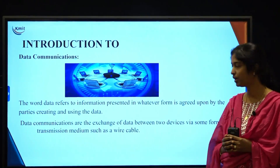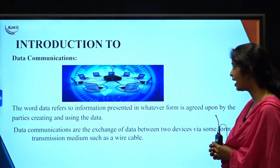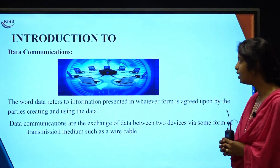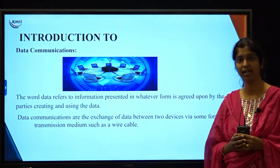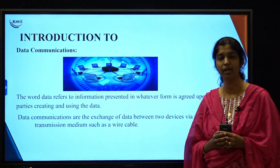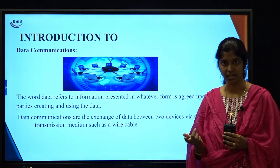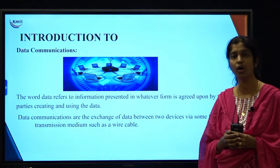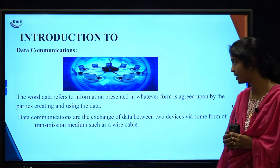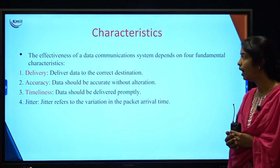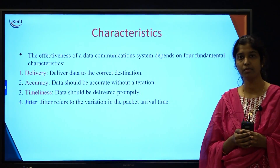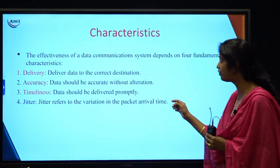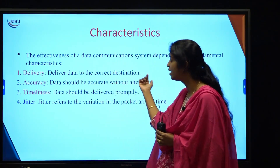If you see the picture, it is very much clear that we have some communicating devices where we are communicating between devices and sharing data. To define what is data communication, data is nothing but the raw fact or the information that we are communicating. Data communication is generally the exchange of data between devices through a transmission link or communication media. There are four characteristics based on which I am going to tell you the effectiveness of a data communication system.